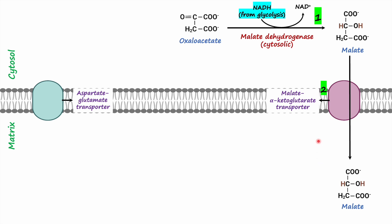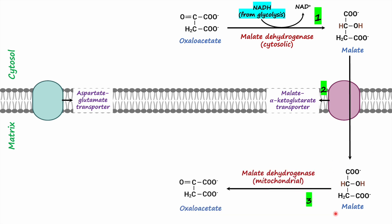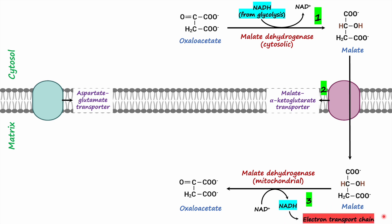So basically the electrons are carried in the form of malate from the cytosol to the mitochondrial matrix. Once inside the mitochondrial matrix, through the reverse reaction, malate is then converted back into oxaloacetate with the help of mitochondrial malate dehydrogenase enzyme. During the reaction, electrons from malate are passed on to NAD+, which is then reduced to NADH. This regenerated NADH then enters the electron transport chain to synthesize ATP.